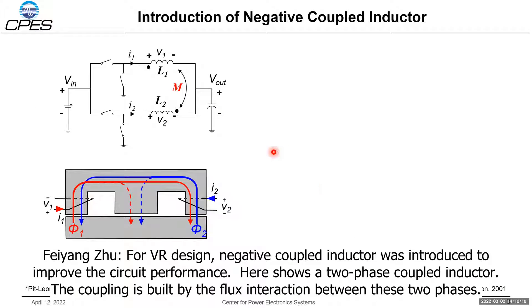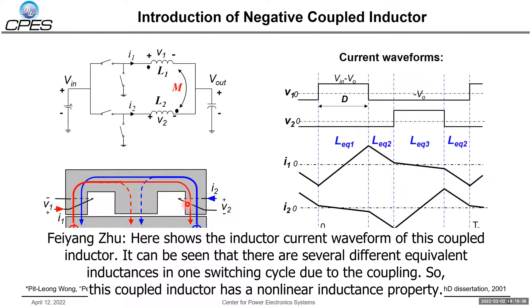For the VR design, the negative coupling inductor was introduced to improve the circuit performance. Here shows a two-phase coupling inductor — the coupling is built by the flux interaction between the two phases. Here shows the inductor current waveform, and it can be seen that there are several different equivalent inductance values in one switching cycle due to the coupling, so this coupling inductor has a non-linear inductance property.